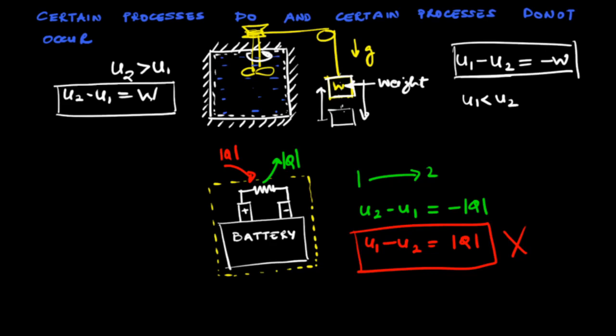These two systems — the Joule's experiment and the battery — are completely different. However, in each case we can identify the cause of the process and predict the direction of the transformation. We can predict whether the forward or reverse process is possible because these processes connect to our experience. Difficulty arises when we need to predict whether a certain process is feasible in a situation that has no connection with our past experience.